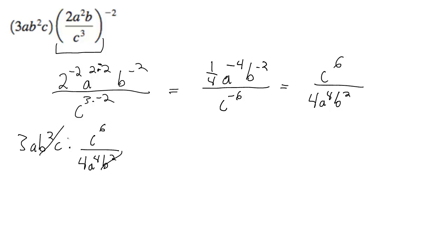So b to the 2nd is cancelled out, the a on top gets cancelled out and you get a cubed on the bottom. So we ultimately end up with 3 c to the 6th over 4 a to the 3rd. And that's it.